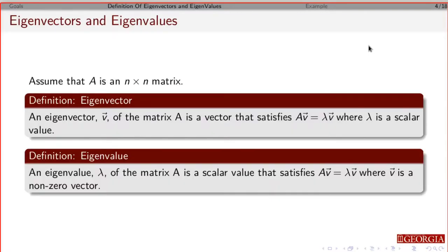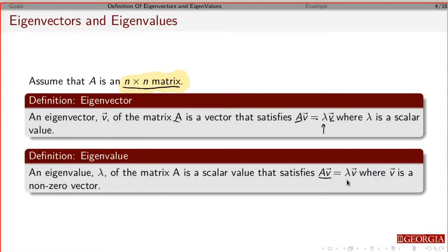Here's the definition, straight out of the book. If you're given a matrix A — and importantly, A is an n-by-n matrix, so this only works for a square matrix — if you take A times V and you get V back, only stretched or compressed a little bit, that vector V is called an eigenvector associated with matrix A. The scalar describing how much you stretch or shrink it is called the eigenvalue. What's important is that the result is in the same direction — just stretched or compressed by lambda.